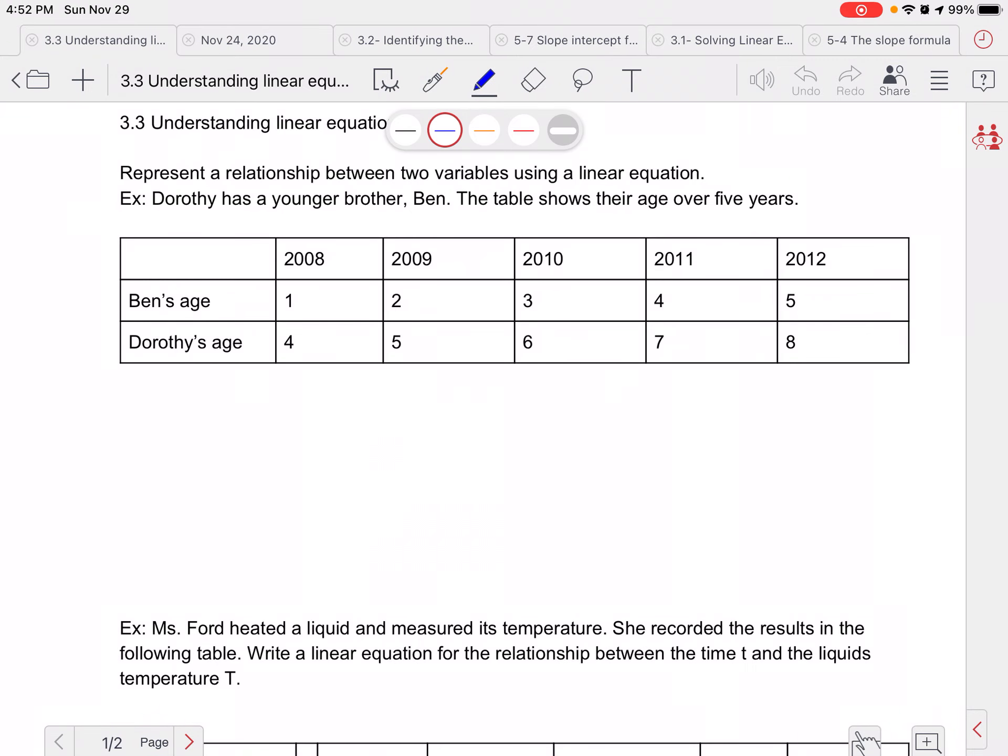So we're going to start looking at linear equations with two variables. It says represent a relationship between two variables using a linear equation. So we're going to try and write an equation to represent all this information. Dorothy has a younger brother, Ben, and the table shows their ages over five years. So we're going to try and find an equation that we can write to do this.